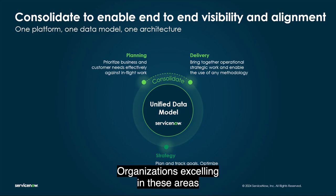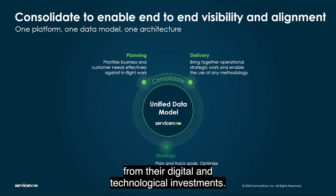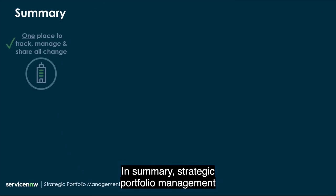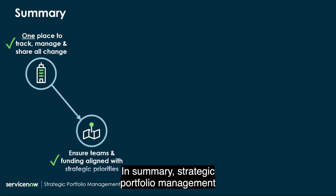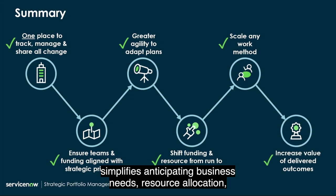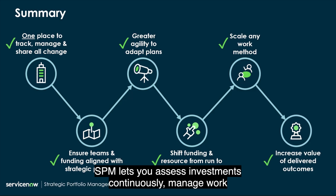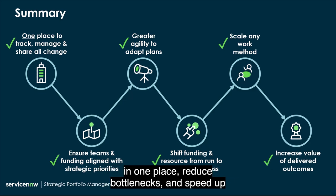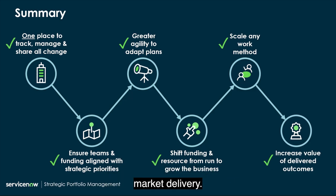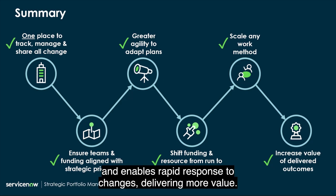Organizations excelling in these areas are twice as likely to achieve superior business results from their digital and technological investments. In summary, strategic portfolio management simplifies anticipating business needs, resource allocation, and portfolio evaluation. SPM lets you assess investments continuously, manage work in one place, reduce bottlenecks, and speed up market delivery. By aligning work, SPM optimizes outcomes and enables rapid response to changes, delivering more value.